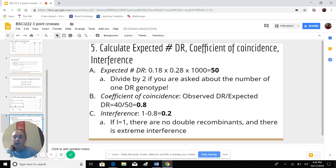So at the end, you'll probably be asked to do additional calculations including the expected number of double recombinants, coefficient of coincidence, and the interference value. To get this expected number of double recombinants, we multiply each RF value, before we convert it to centimorgans by the total number of individuals. So we get 0.18 times 0.28 times 1,000, and that gives us 50.